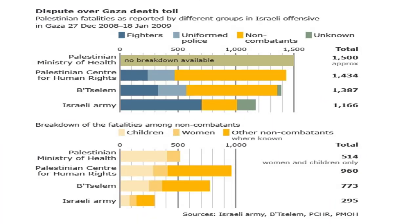First off, casualty rate numbers are always hotly disputed in wars for obvious reasons. Obviously, Israel wants to show that they're being surgical in their efforts, and of course Palestinians want to show how they're being collectively punished. There can be anywhere from 30 to 50 percent divergence depending on who wants to write the history. We're going to use the Israeli numbers in our calculations, so you'll have to adjust relative to whether you believe the Palestinian numbers or not.